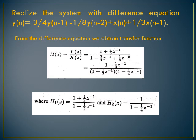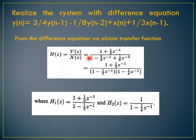Realize the system with the difference equation: y(n) = (3/4)y(n-1) - (1/8)y(n-2) + x(n) + (1/3)x(n-1). Here x(n) and x(n-1) represent the zeros, and y(n), y(n-1), y(n-2) represent the poles. From this difference equation we obtain the transfer function: H(z) = (1 + (1/3)z⁻¹) / (1 - (3/4)z⁻¹ + (1/8)z⁻²). The order of the zero is 1 and the order of the pole is second order.